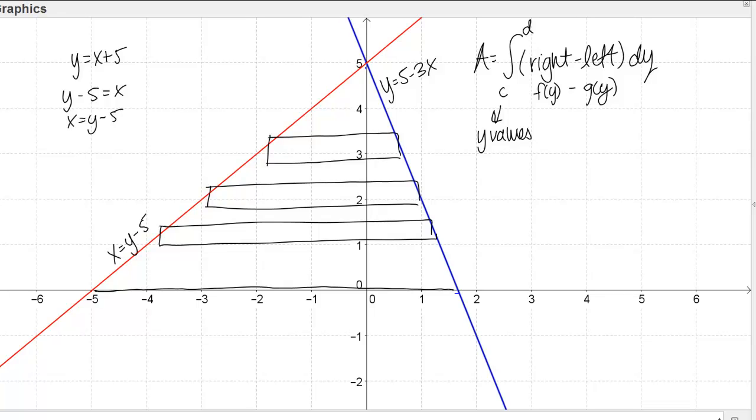Then I can do the same thing with my other line. My other line is y equals 5 minus 3x and let's just solve that for x. I can write this as 3x equals 5 minus y or x equals 5 thirds minus 1 third y. I can think of my blue line now as a function x equals 5 thirds minus 1 third y. Now I have everything in terms of y.